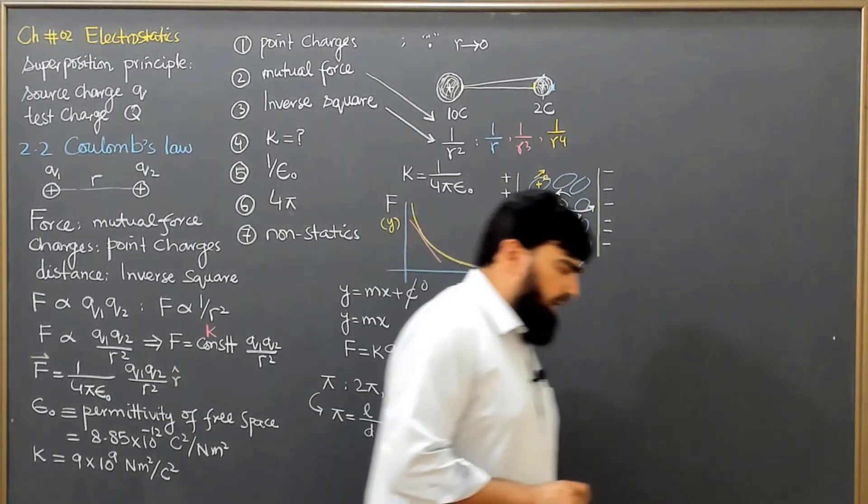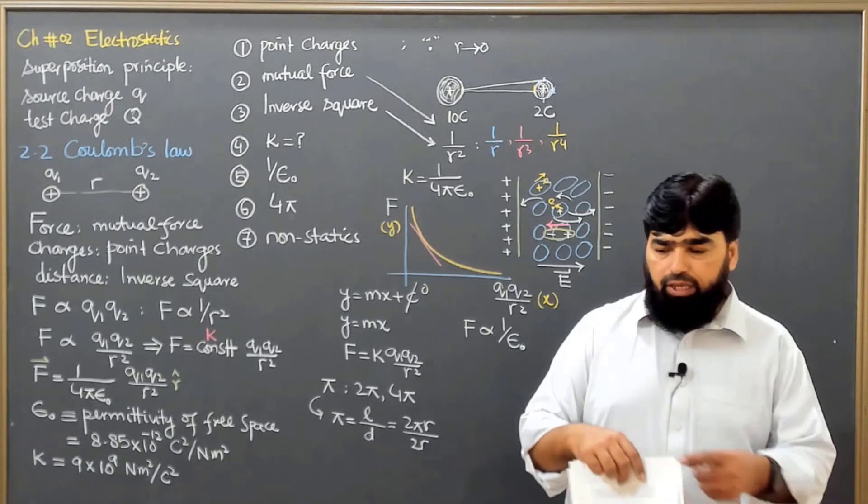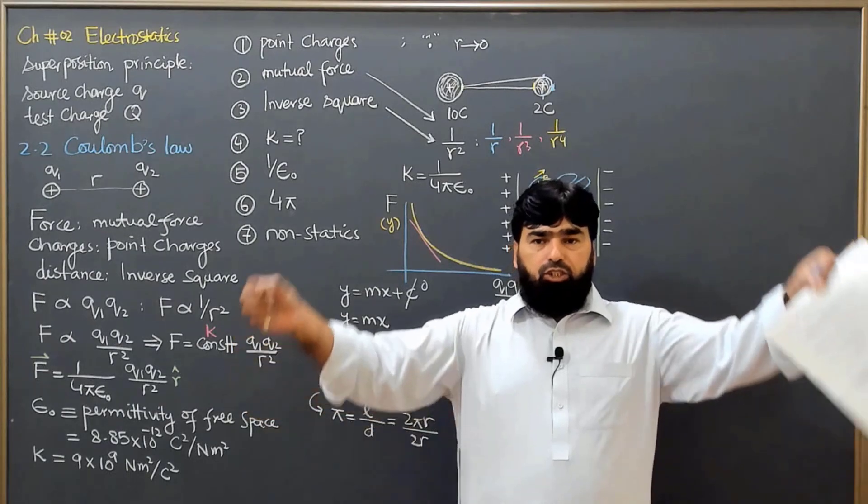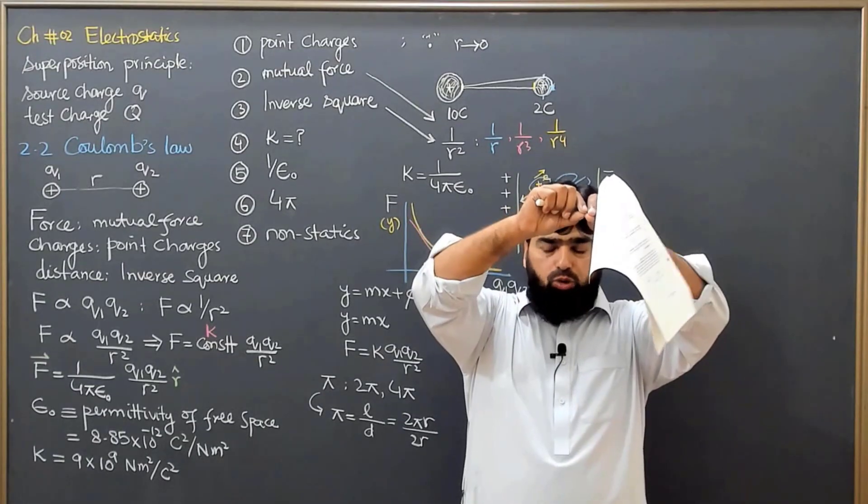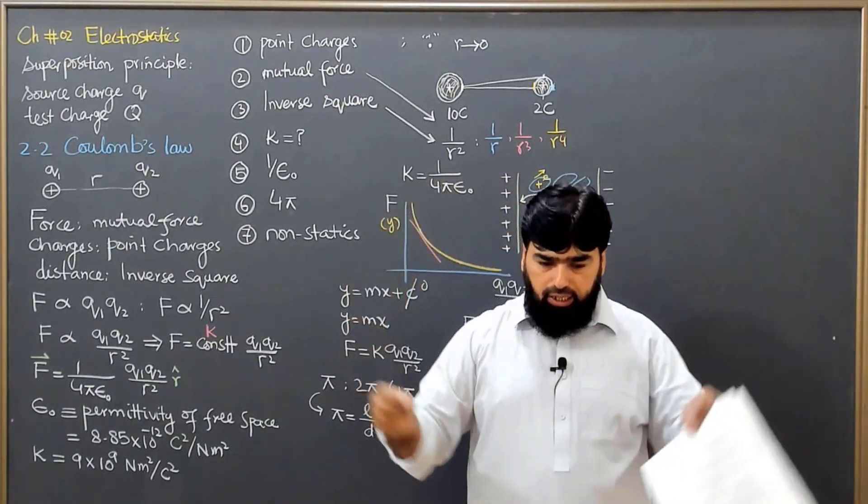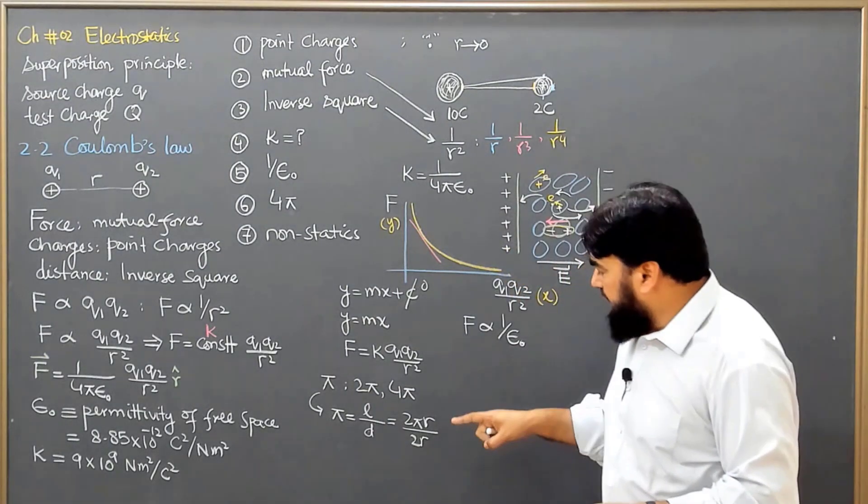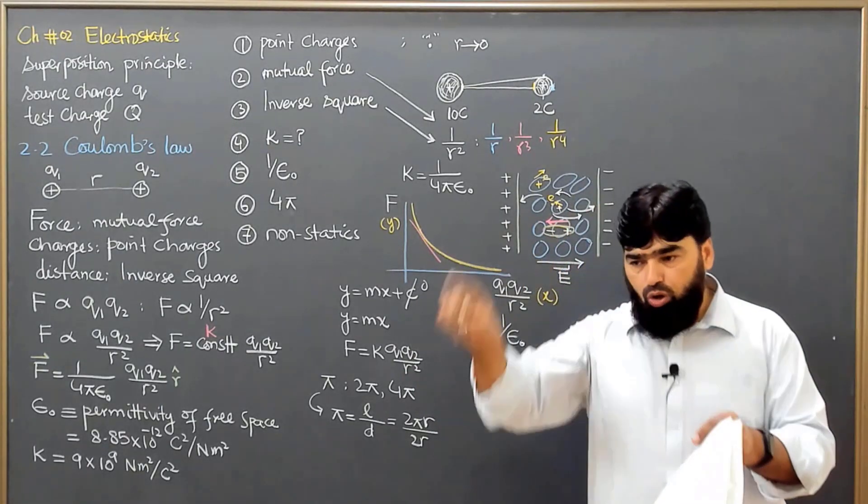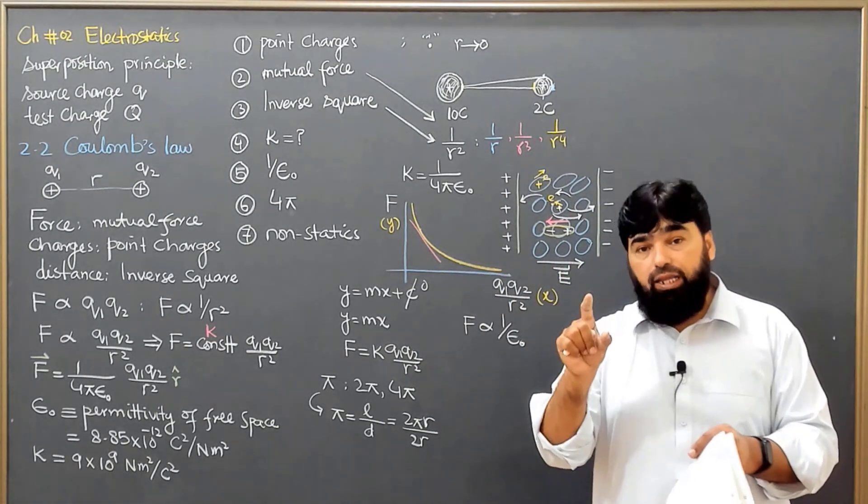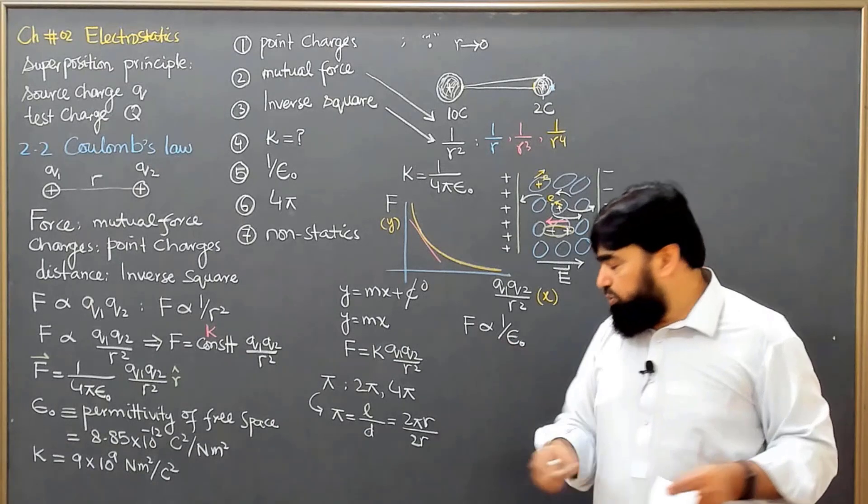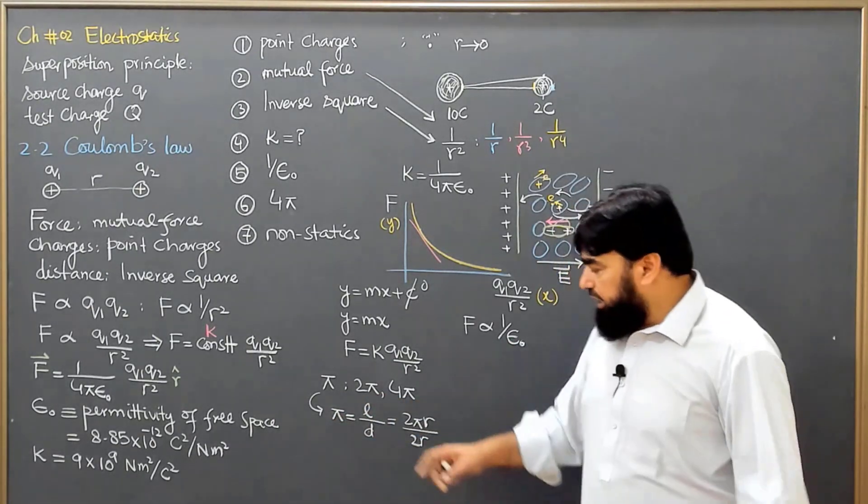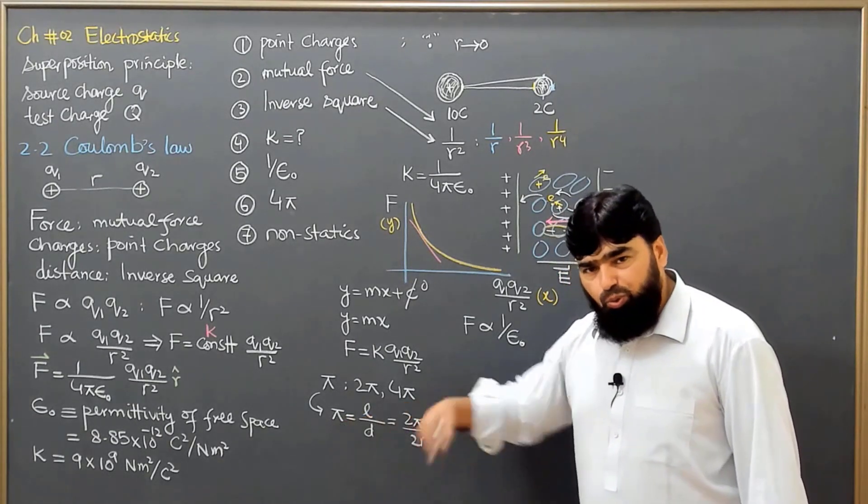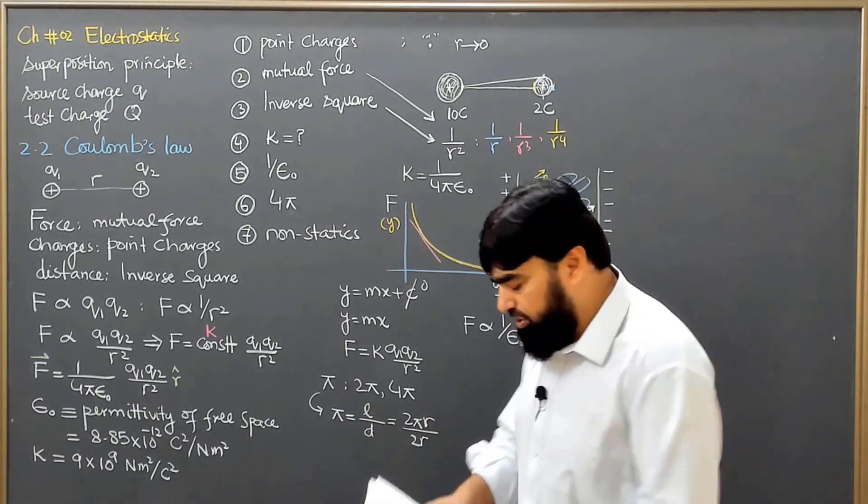If I am having a certain length and that length I just combine the ends of that one, then it will make a circle. And inside that circle it will have its own diameter. So the ratio of the circumference, meaning that length, to the diameter will be equal to π. It means it is from linear dynamics to rotational dynamics, or from translational dynamics to rotational dynamics.